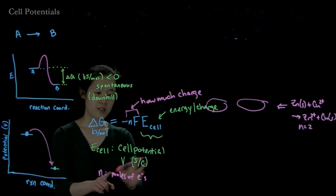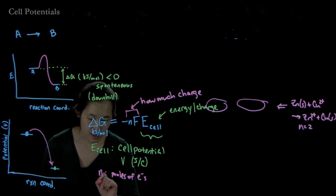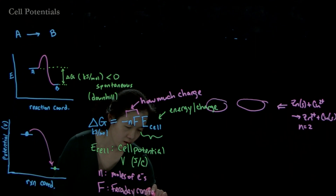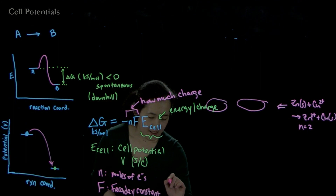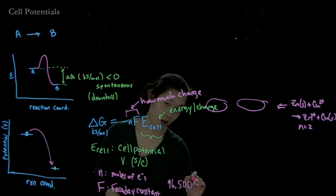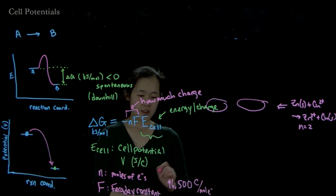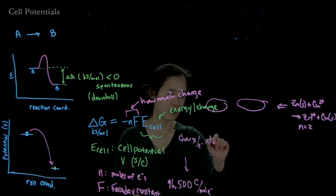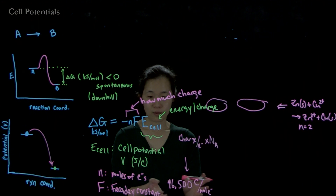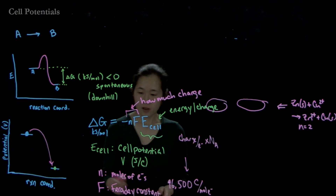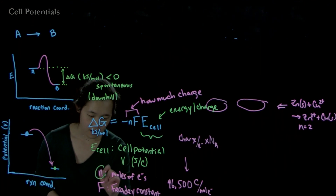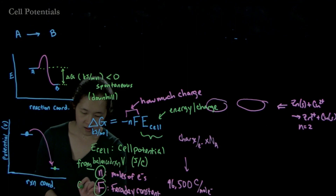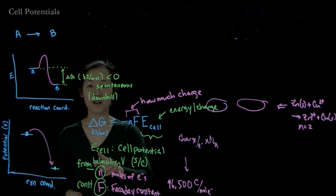We want to convert from moles of electrons to coulombs in order to cancel units. That's where Faraday's constant comes in — approximately 96,500 coulombs of charge per mole of electrons. This was calculated as the charge of an electron per electron, times Avogadro's number, giving us 96,500 coulombs per mole. So all we need to know is E cell, and then we can get out the energy.